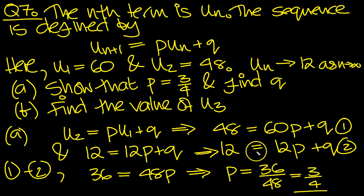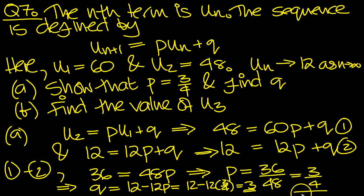If p equals 3/4, we can see that q must equal 12 minus 12p. Looking at equation 2, that equals 12 minus 12 times 3/4, which is just a quarter of 12, which is 3. So p equals 3/4, q equals 3. That's part a done.